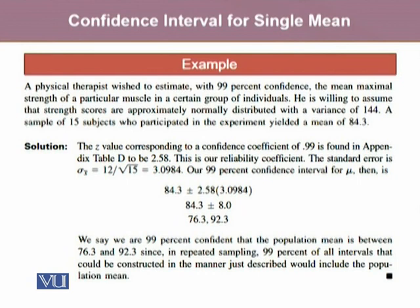The lower confidence limit obtained is 76.3 and the upper confidence limit is 92.3. Hence, we say that we are 99% confident that the population mean is between 76.3 and 92.3, since in repeated sampling 99% of all intervals constructed in this manner would include the population mean.